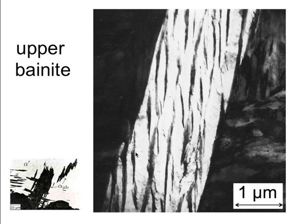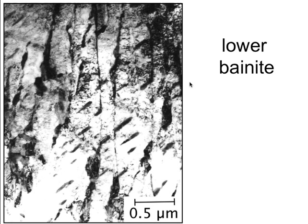This is upper bainite — no particles inside the plates but between the plates of ferrite. This is what lower bainite looks like: platelets of ferrite with particles of cementite inside the plates and finer precipitates between the plates. Whatever theory we have has to predict that under certain conditions you get precipitation only between the plates, and under other conditions inside the plates and between them — this is a very well-established microstructural observation.